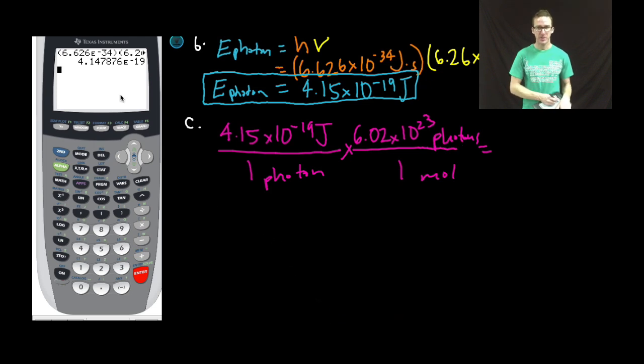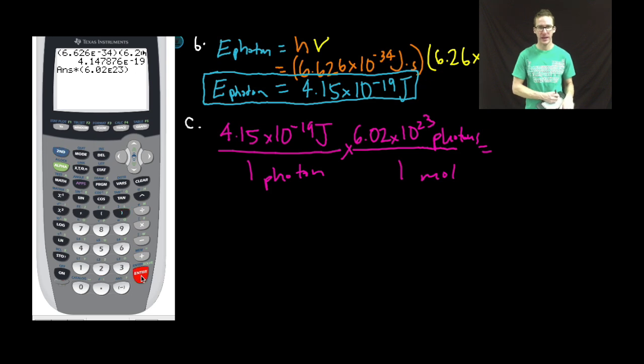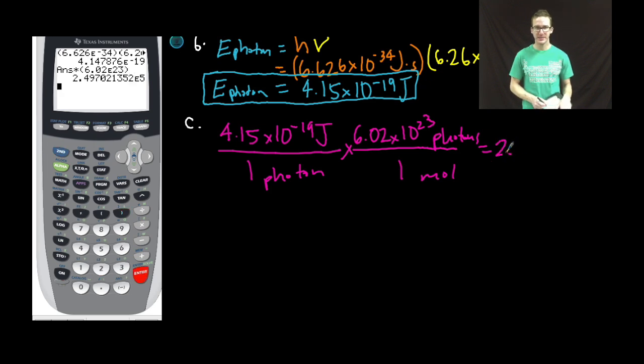Calculator time. I get 2.50 times 10 to the 5 joules per mole. Cancel, cancel. Joules per mole is what remains. So again, this is the amount of energy in joules per mole of photons. But we're asked for kilojoules, so one more step.